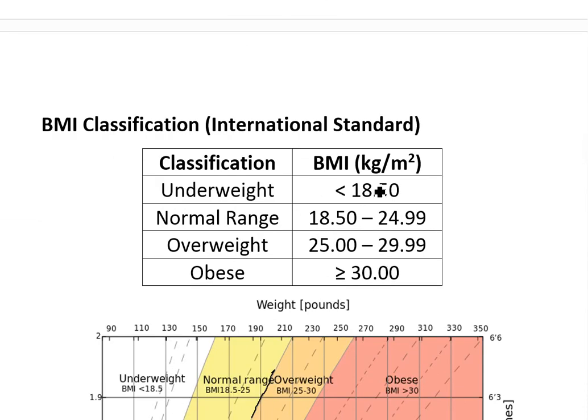Underweight is considered as less than 18.5 BMI. Normal range between 18.5 and 24.99. Overweight is above 25, up to 30. And then obese is just a higher level of overweight that's above 30.